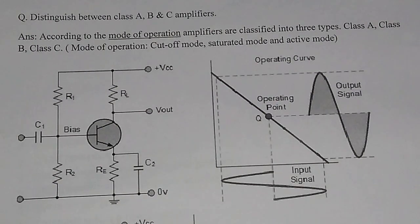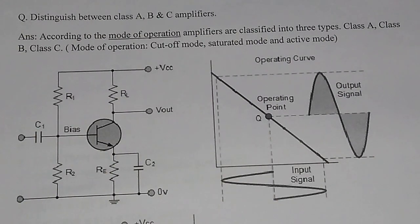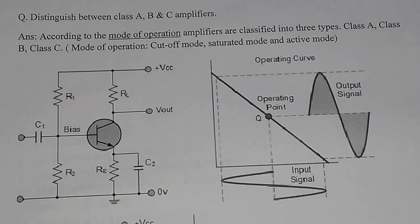In this video, we will discuss the distinction between class A, class B, and class C amplifiers. According to the mode of operation, amplifiers are classified into three types: class A, class B, and class C.